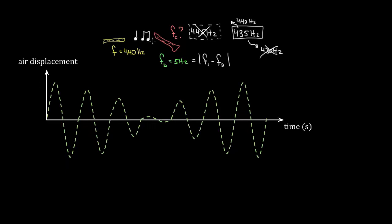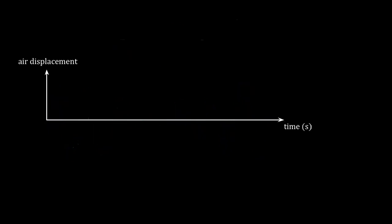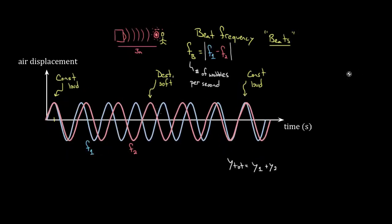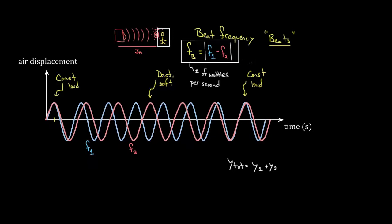So to recap: beats or beat frequency occurs when you overlap two waves that have different frequencies. This causes the waves to go from constructive to destructive to constructive over and over, which we perceive as a wobble in the loudness of the sound. The way you find the beat frequency is by taking the difference of the two frequencies of the overlapping waves.